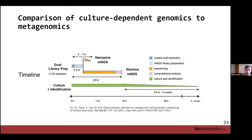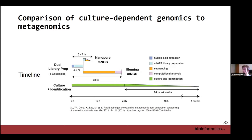Another comparison is time: culturing something can take anywhere from 24 hours to weeks — TB takes about four weeks to culture. Metagenomic sequencing can take under 24 hours. While nanopore sequencing might run for seven hours, you'd want to run it longer to ensure high quality data before making clinical decisions. The key point is that metagenomic sequencing takes much less time to identify the cause of disease than traditional culture methods.